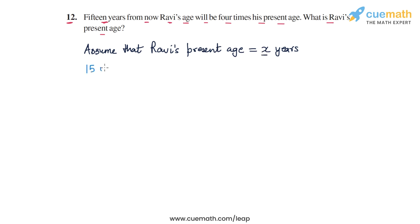So 15 years from now or 15 years later, Ravi's age can be written in terms of x as x plus 15 years.